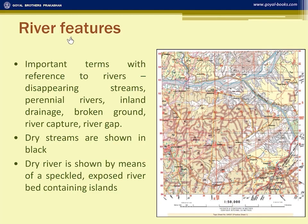The various features connected with rivers are many, and many questions are asked on the basis of these features. First, this river is dry. How can you be sure? Because you can see the river bed speckled with black dots, showing that the river bed is exposed. You can also see white patches, which are known as islands.